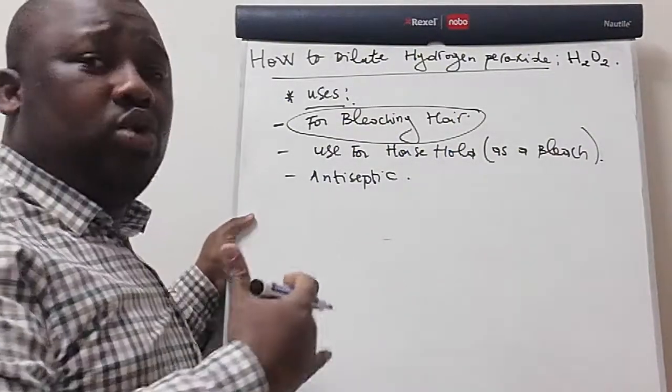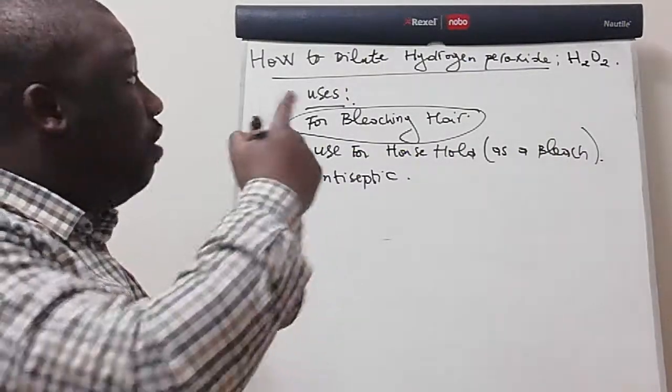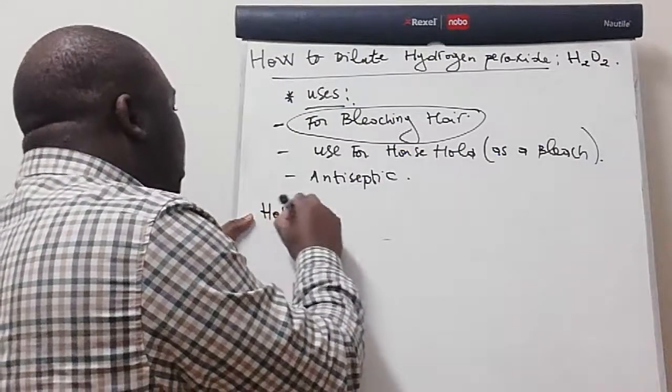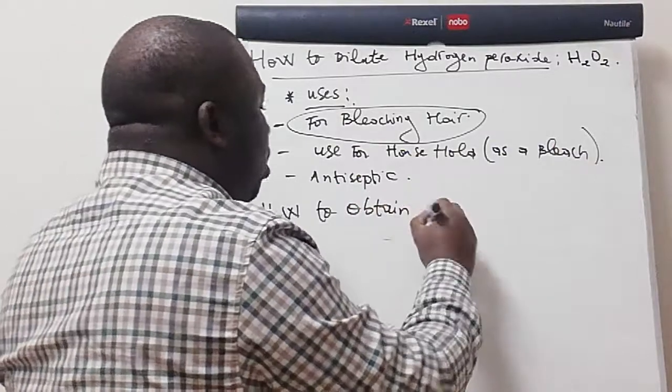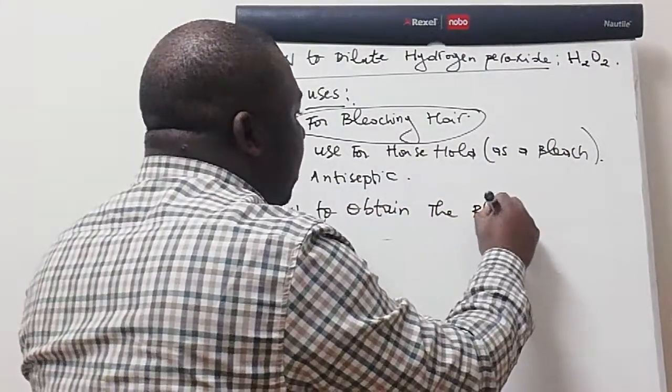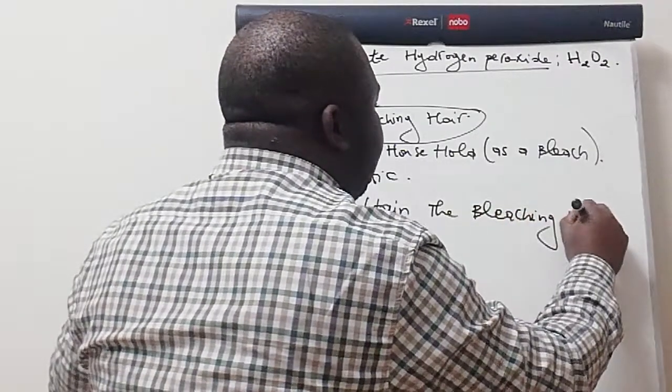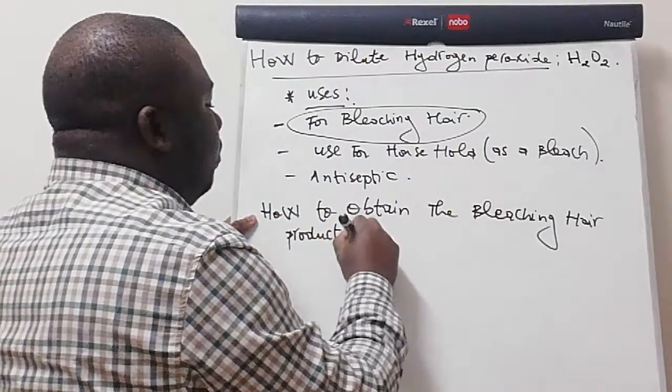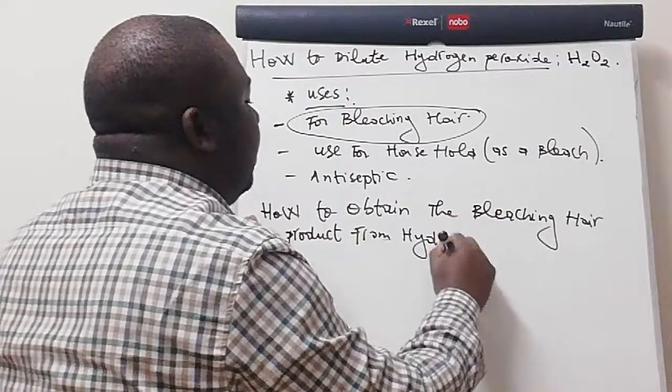So let us look at how to obtain the bleaching hair product from hydrogen peroxide. How to obtain the bleaching hair product from hydrogen peroxide. I will explain this.